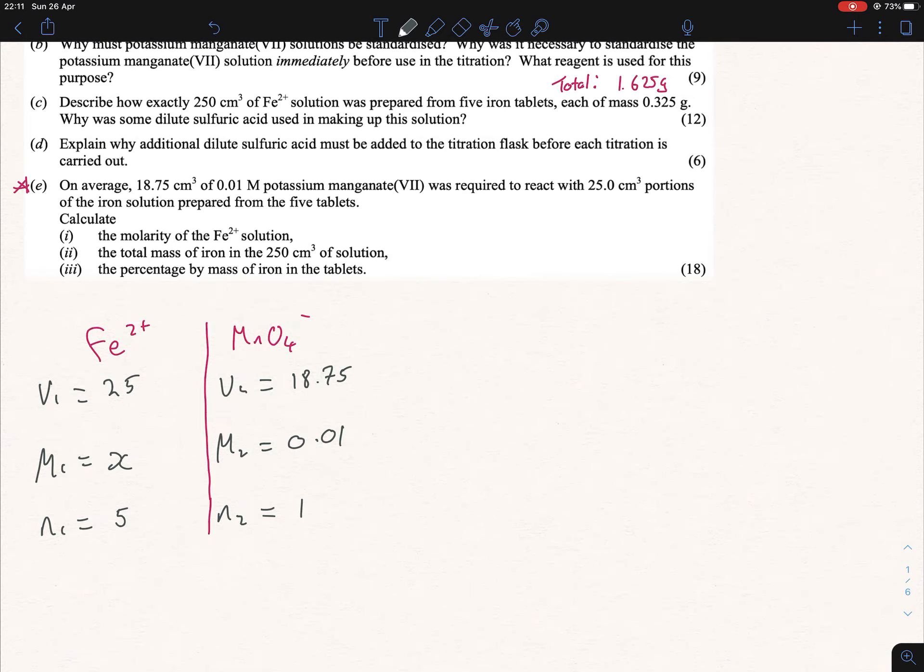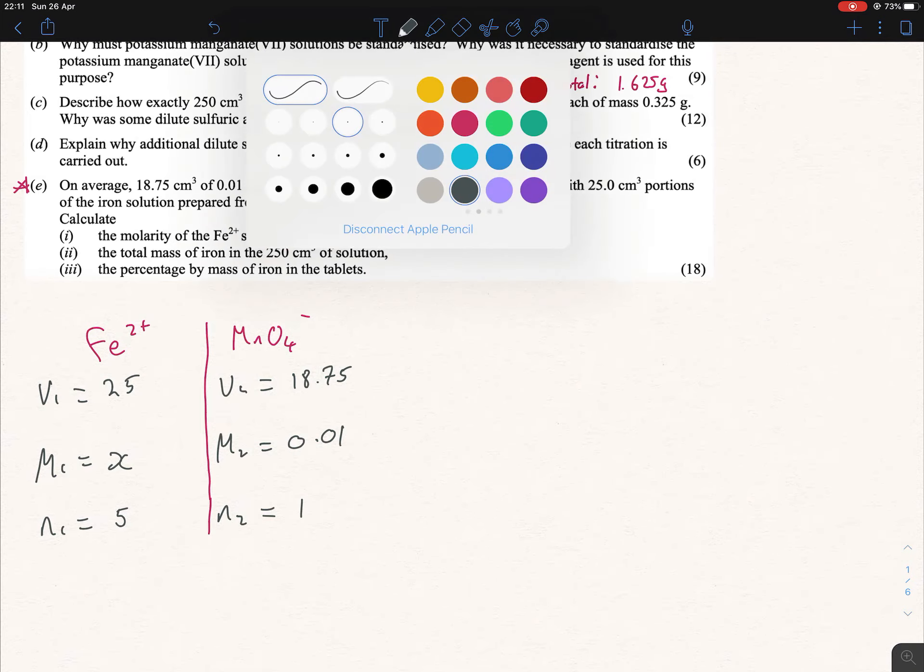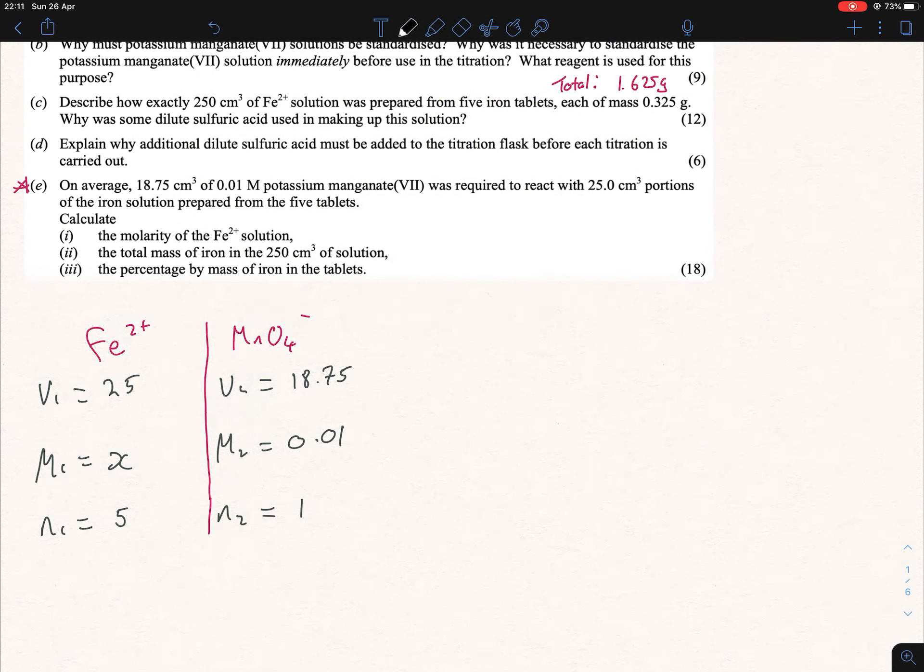If we do that out correctly, you'll get 0.0375 molarity, meaning moles per liter.